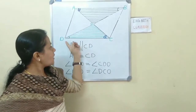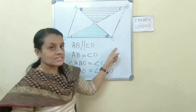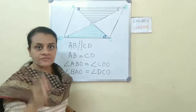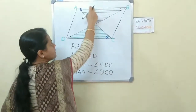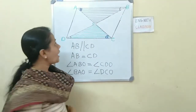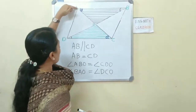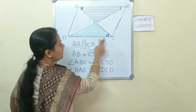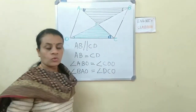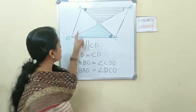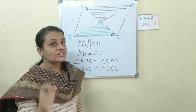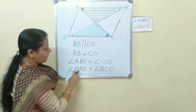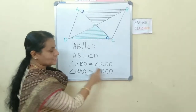Now, since AB and CD are parallel and AC is the transversal line cutting these two parallel lines, angle BAO is equal to angle DCO. Why? Because these two angles are alternate angles. Note it down: angle BAO equals angle DCO.